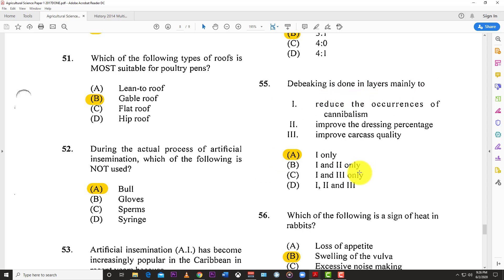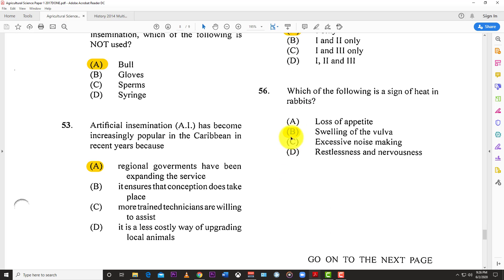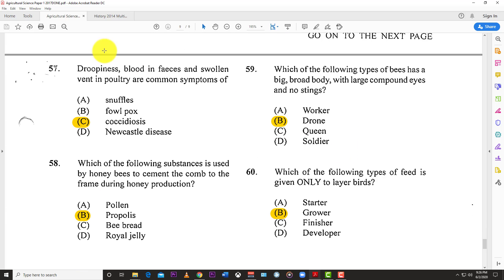Number fifty-five: Debeaking is done in layers mainly to reduce the occurrence of cannibalism. Number fifty-six: Which is a sign of heat in rabbits? The truth is rabbits don't normally show signs of heat, but the best one here would be B, the swelling of the vulva.